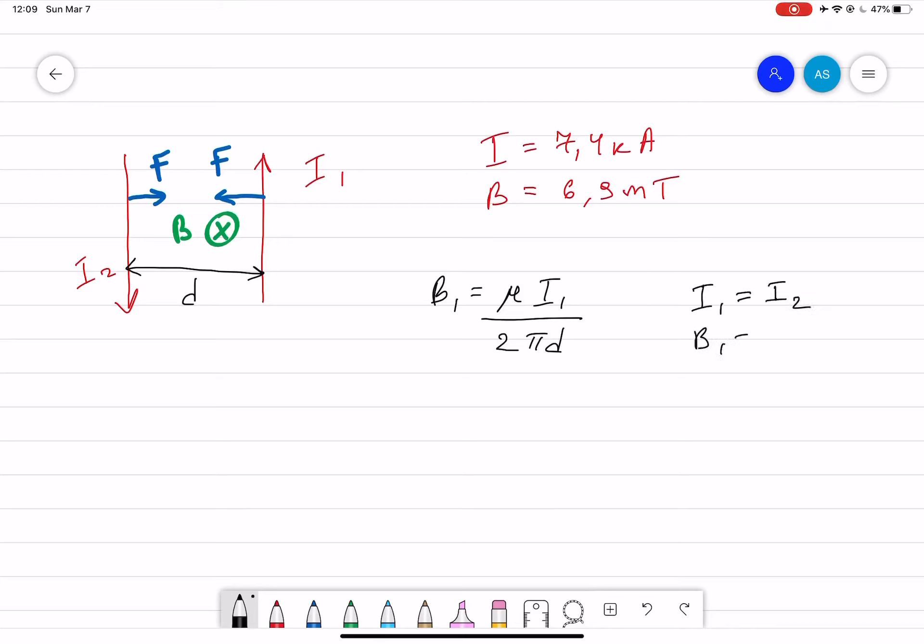and B₁ is equal to B₂ because the currents are equal, if that's the case then you could just say that d is equal to μ₀I divided by 2πB. Now we have current, we have B, if you plug in the numbers you should get the distance d.